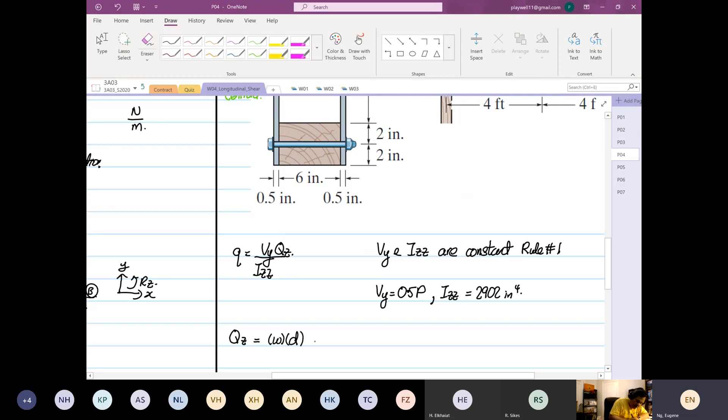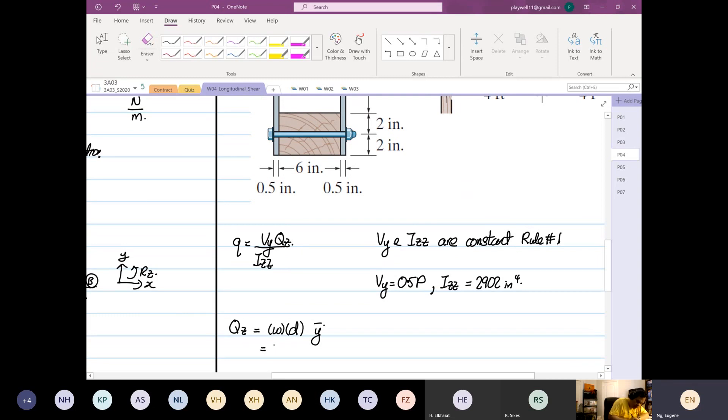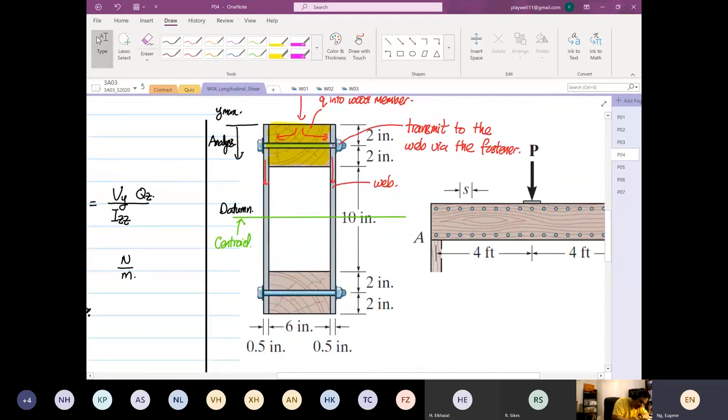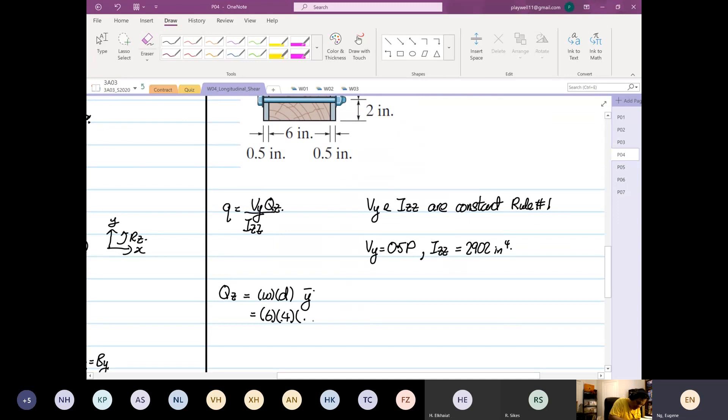Based on the analysis that we're going to carry out, the datum is at the centroid, and our analysis will start when y max is at the maximum. This is our analysis direction. The datum will start from the centroid, the analysis will start from y max. When that's the case, your QZ will be equal to the width multiply by depth and multiply by y bar. So the width of the wooden member is six inch, the depth is four inch, and the y bar is basically from here coming down to here, and this will be equal to two plus ten divided by two. This will be equal to two plus ten divided by two times six times four is equal to 168 inch cube.